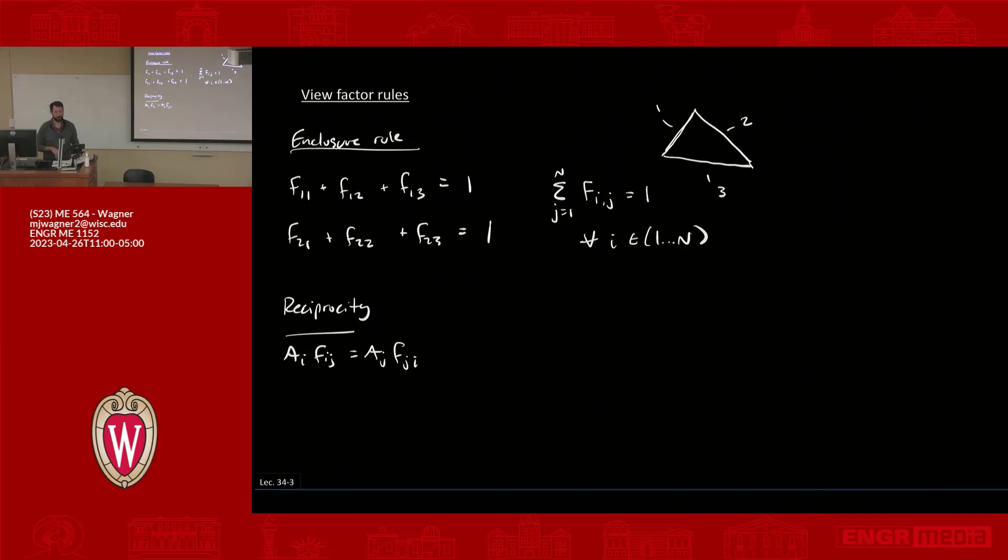You might wonder where this comes from, so we could briefly derive it. The idea is that if you take radiation emitted by a surface, that is q̇ᵢ equals Aᵢσtᵢ⁴—that's the radiation emitted by i. Radiation emitted by j would be the same thing. Let's say, what is the radiation that's hitting j from this? It would be fᵢⱼ times Aᵢσtᵢ⁴—that's the radiation hitting surface j from surface i.